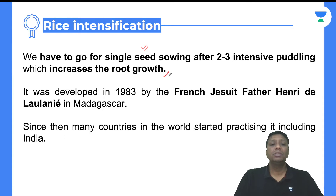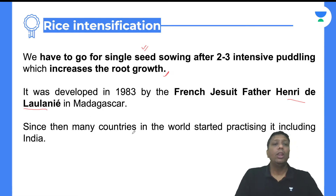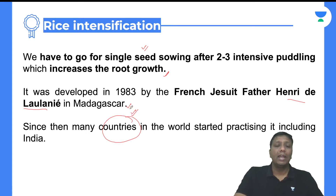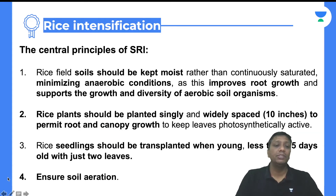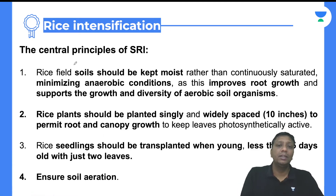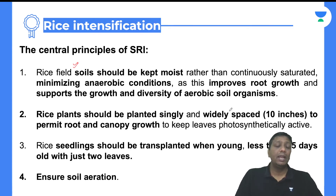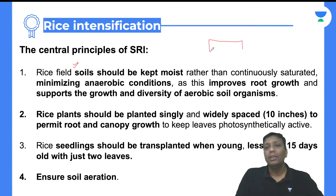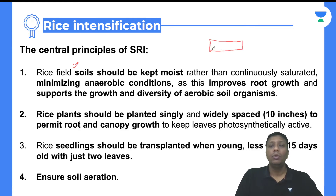This technology and procedure was first adopted in France by Father Henri de Laulanié in Madagascar. Later on, many countries adopted it, and India is also one of them. The central principles of the rice intensification process include: the soil should be kept moist, and the land should be properly leveled. Land should be at one proper level — if it is uneven, some areas will have waterlogging and others will have less water availability.